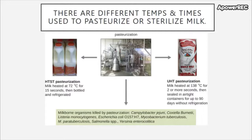There are two main types of pasteurization used for milk. The most common in the United States is high-temperature short-time pasteurization, abbreviated HTST. The milk is heated at 72 degrees Celsius (about 160 degrees Fahrenheit) for 15 seconds, then bottled and refrigerated. Ultra-high-temperature pasteurization, or UHT, heats milk to 138 degrees Celsius for two or more seconds, then seals it in an airtight container for up to 90 days without refrigeration. This allows pasteurization without negatively affecting taste or flavor.